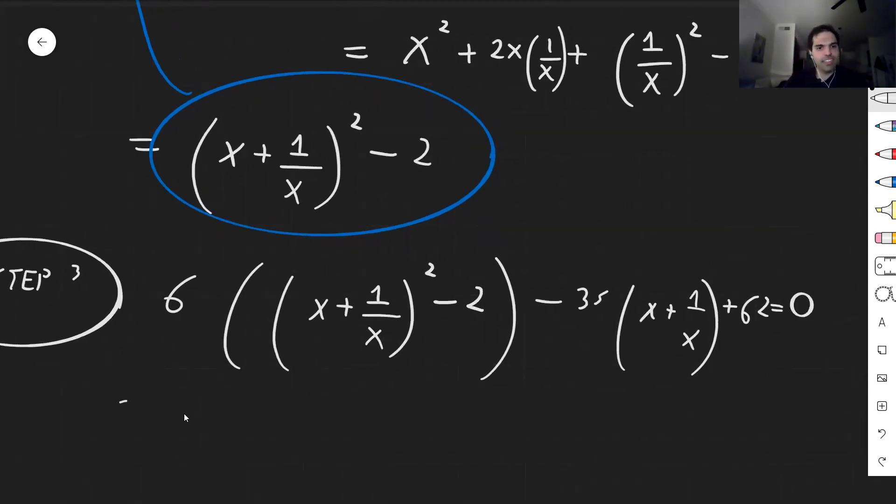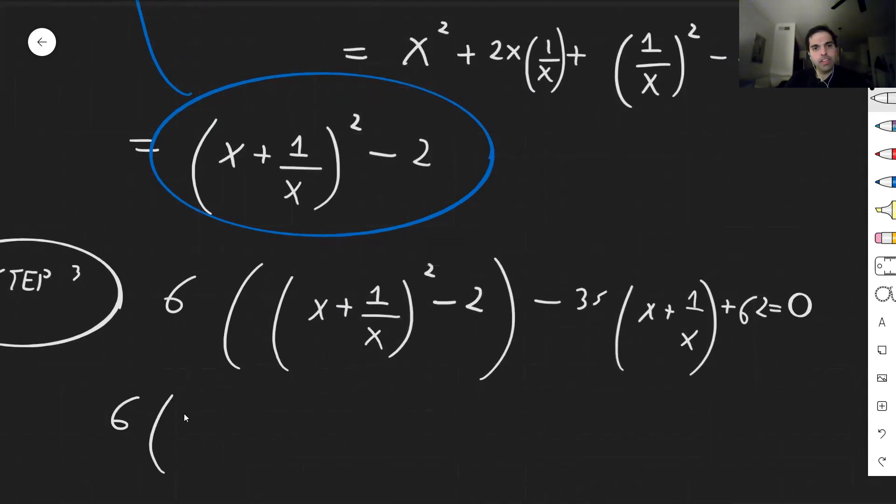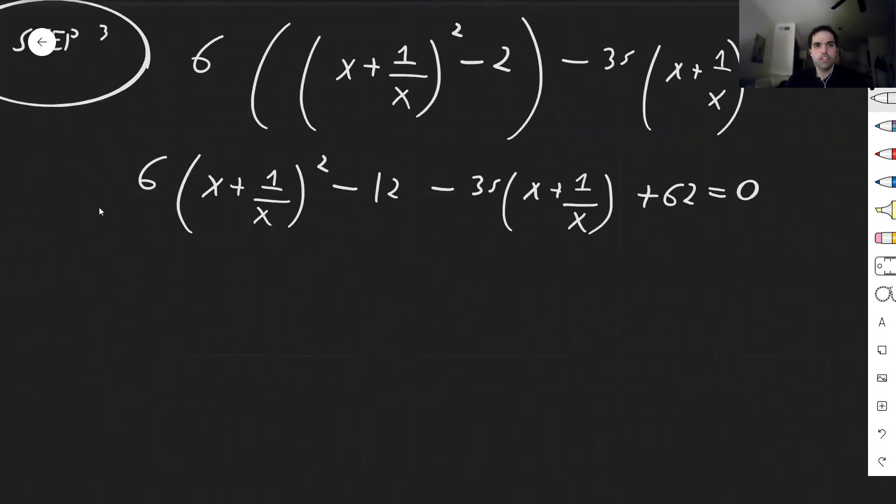And now let's expand this out. So six times the quantity x plus 1 over x, squared, minus 12, minus 35 times the quantity x plus 1 over x, and then plus 62 equals 0. And then this becomes six times the quantity x plus 1 over x, squared, and then minus 35 times x plus 1 over x, plus 50 equals 0.